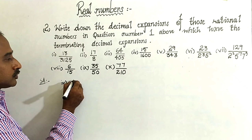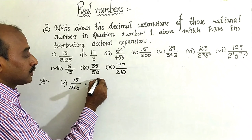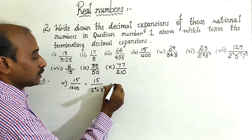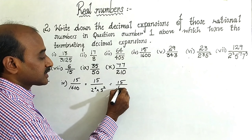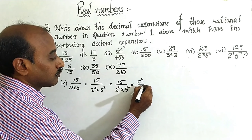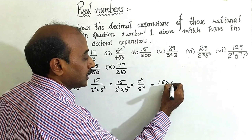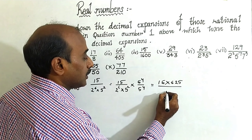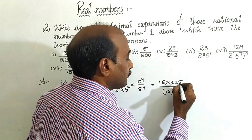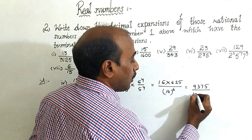Fourth one: 15 by 1600. That is equal to 15 by 1600, which you can write as 2 to the power 6 into 5 squared. So this is 15 by 2^6 into 5^2. You have to multiply and divide with 5 to the power 4, giving 5^4 over 5^4. That equals 15 into 5^4, which is 625, so 15 times 625 equals 9375, by 10 to the power 6 — one followed by six zeros.